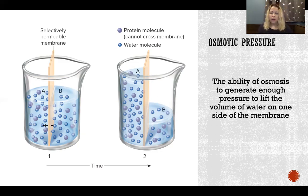When it does that, it generates osmotic pressure, which is the pressure that allows the level of the solution to increase to such a great extent. Osmotic pressure is what allows in the picture for side A to have such a higher level than side B.